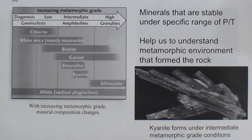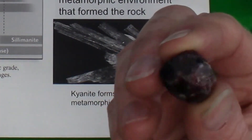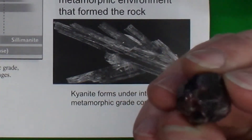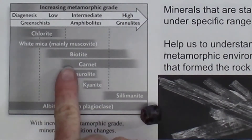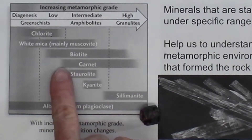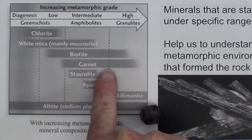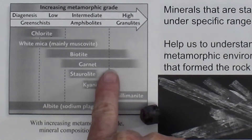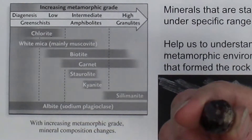Another mineral that forms under metamorphic conditions is garnet. As you can see in this diagram, garnet is an intermediate to high grade metamorphic mineral. It can form in intermediate grade rocks, but as the temperature and pressure increase, garnets are still stable and just grow larger and larger over time.